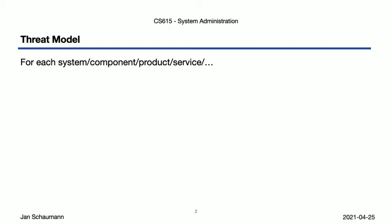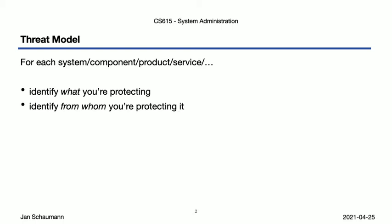Similarly to how we perform a risk assessment, for a proper threat model we also need to begin by identifying just what exactly it is we're protecting. As we mentioned last time, the different assets we have will likely lead us to identify different types of threats and vulnerabilities, but we didn't really discuss just who it is that might attempt to exploit a given vulnerability, and that really can make an important difference in determining your mitigation strategy. It's important to keep in mind that your attackers are actually human beings with very specific goals. You are not attacked willy-nilly, but generally with very specific intentions and desired outcomes.